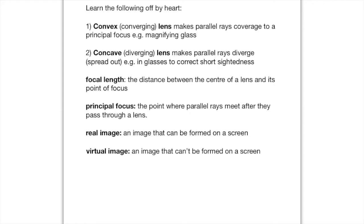First of all, what is a convex lens? A convex lens is otherwise known as a converging lens. If you know what the word converging means — it is actually just a normal English word — it means coming together. So if you've got a couple of rays and they pass through a convex or converging lens, they'll be brought together and they'll meet behind the lens. An example of use of this is the magnifying glass.